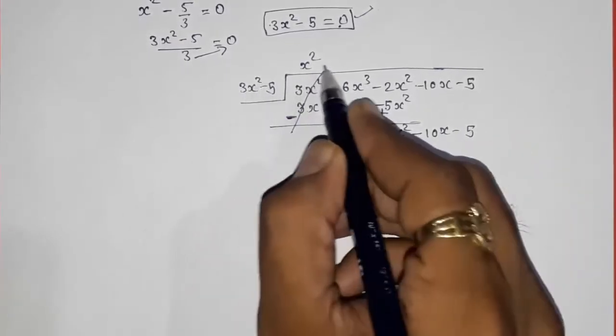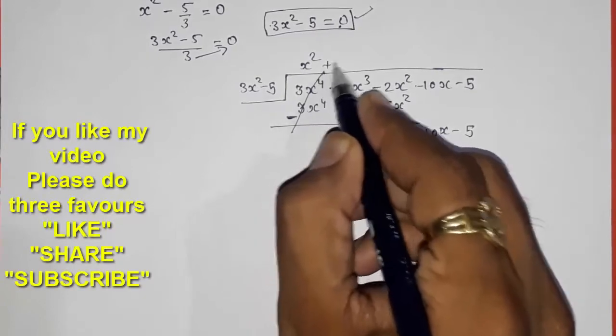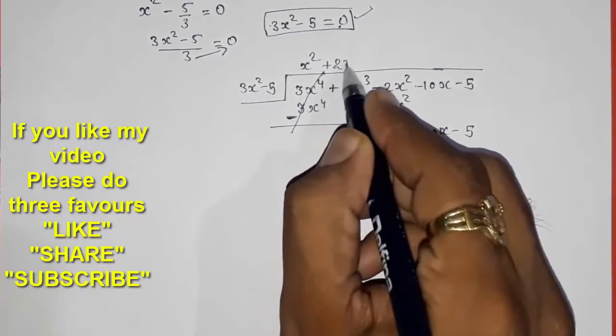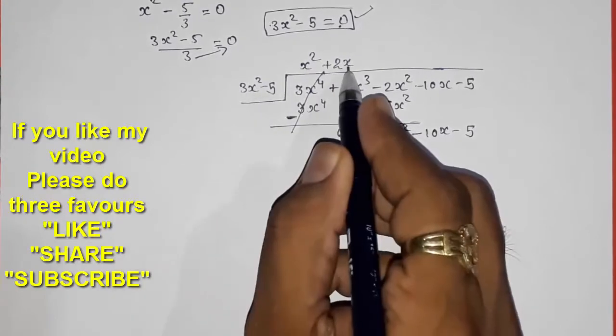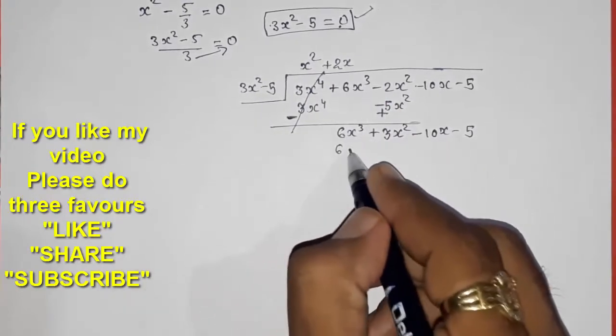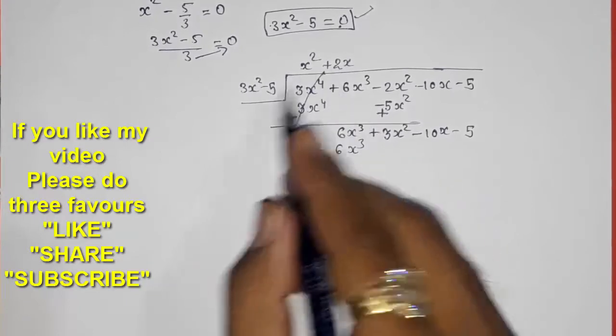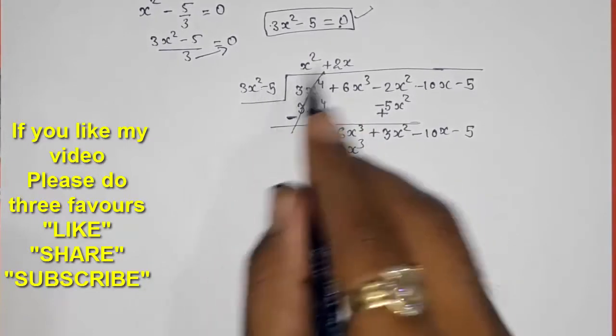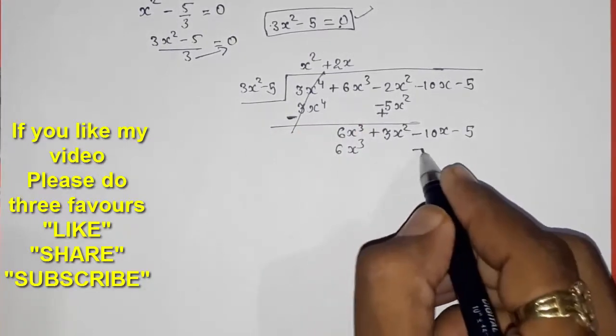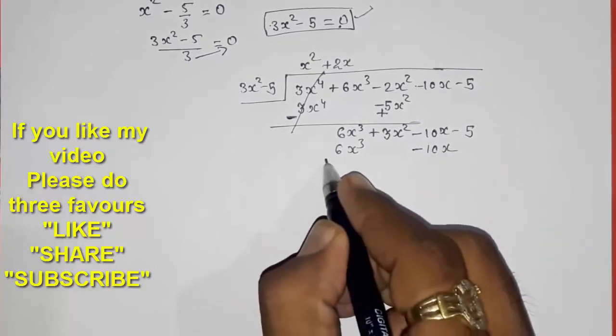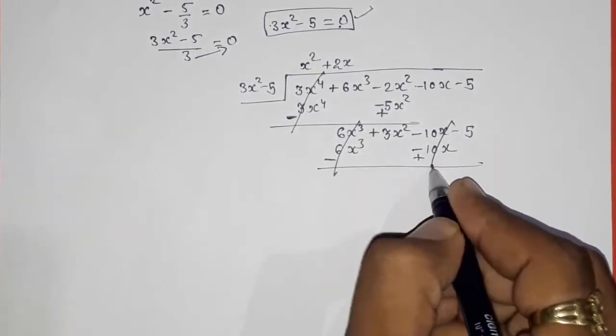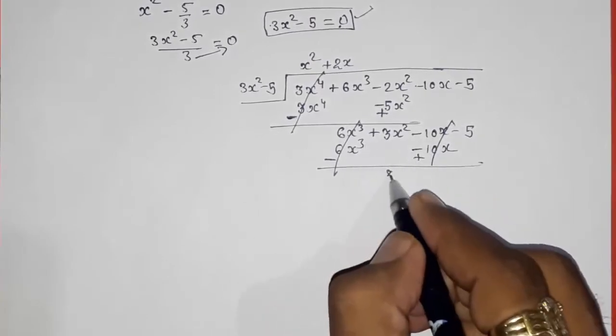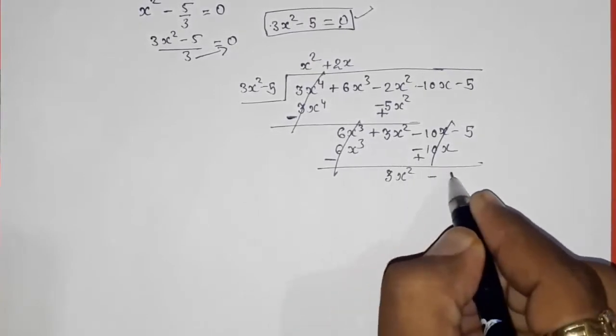Now 3x square multiply with plus 2x. So 2x into 3x square: 3 times 2 is 6, and x square into x is x cube. So 6x cube. Now 5 times 2 is 10x. So minus 10x. Again sign change. Sign change. These both will get cancelled.